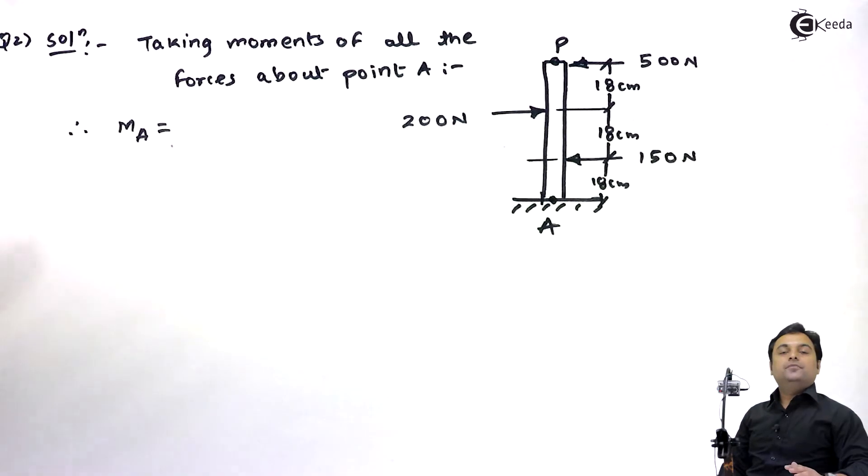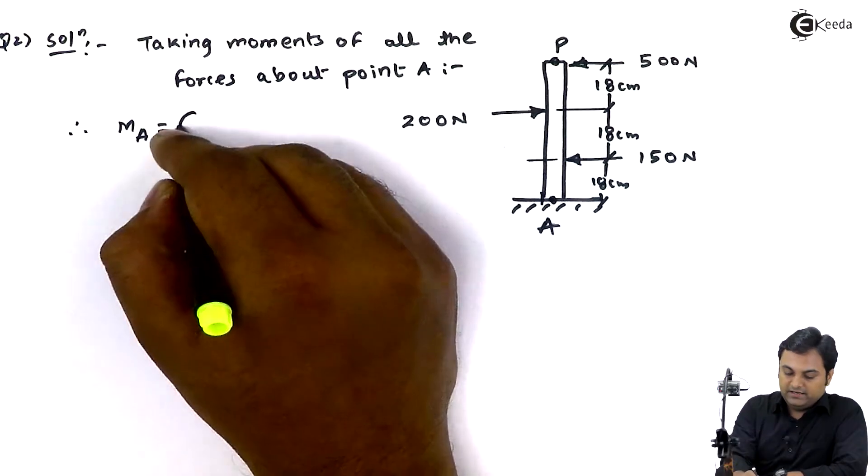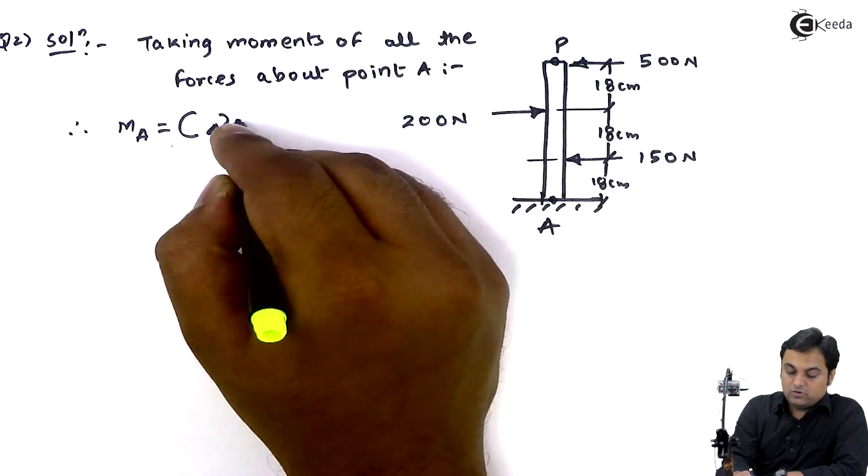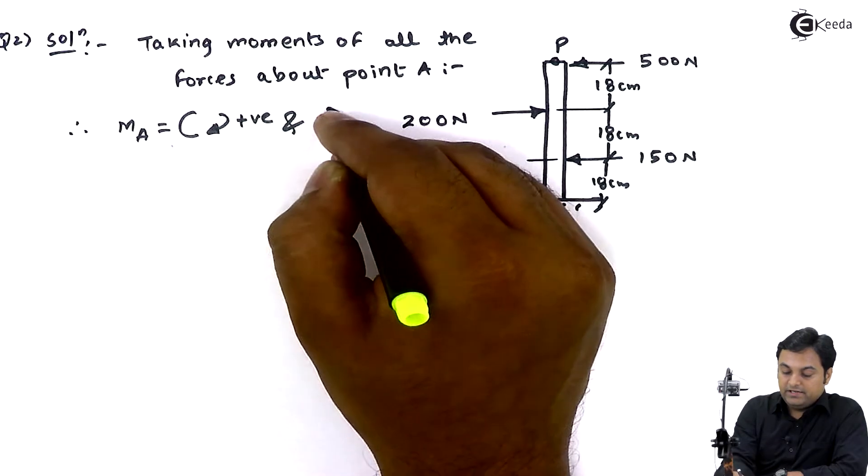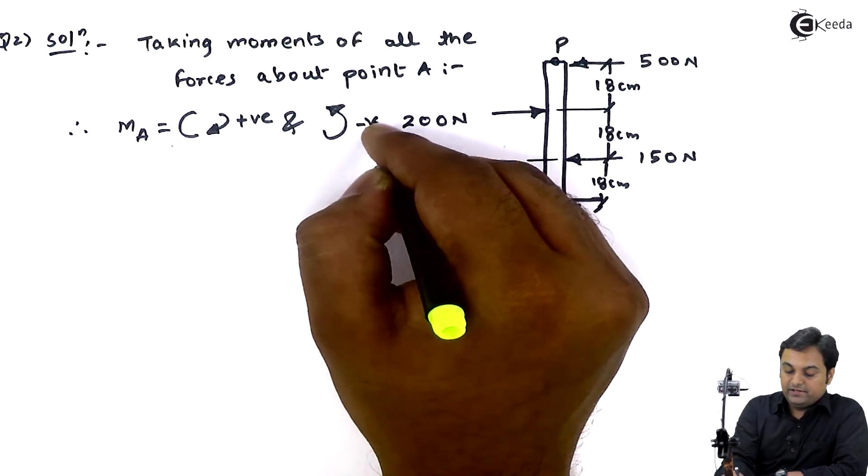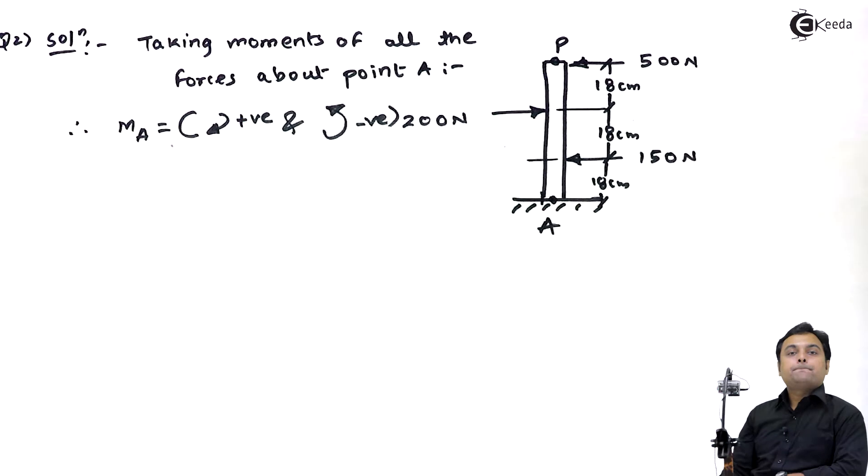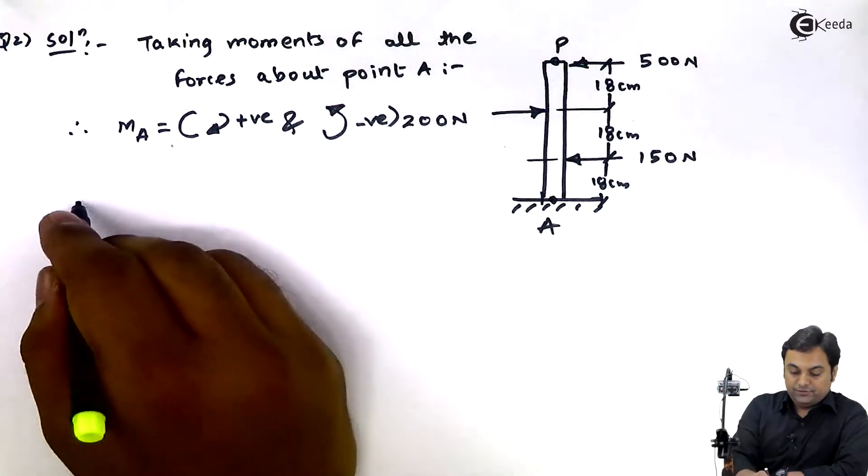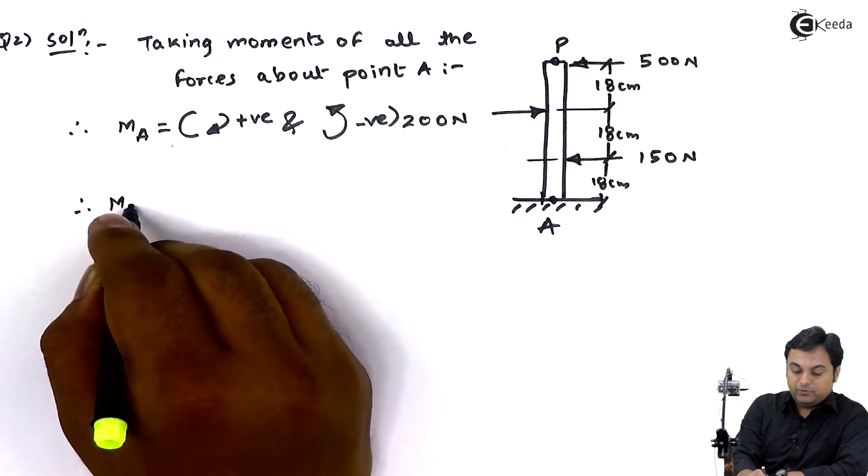Clockwise moment as positive, anti-clockwise moment would be treated as negative. So I'll write the convention in brackets: clockwise moment to be taken as positive and anti-clockwise moment will be negative. Therefore moment about point A is equal to...